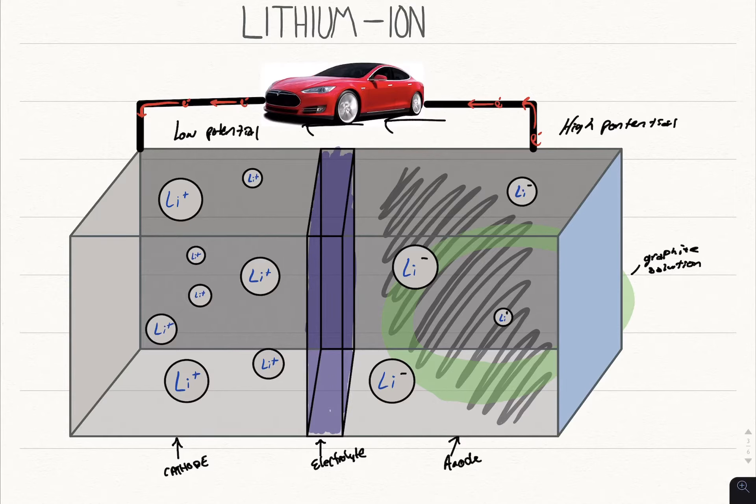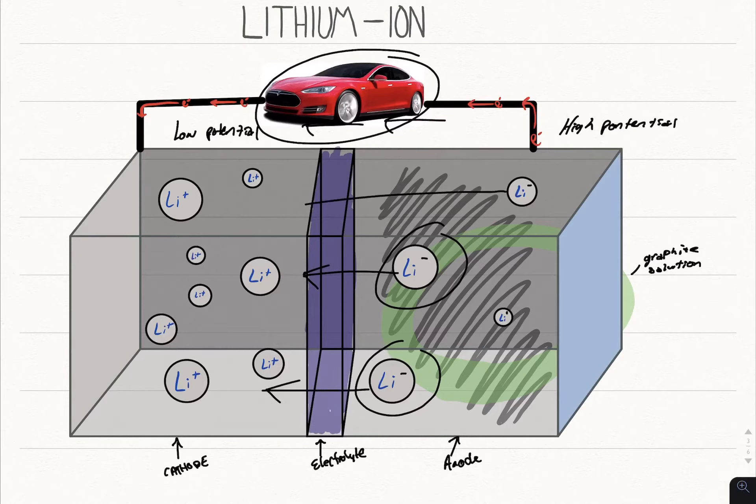Now these guys, the anions, once they lose their electrons, they're going to flow through this electrolyte membrane and they're going to be cations. When all of these guys flow through the membrane, then the battery is discharged.